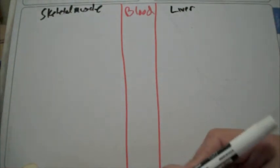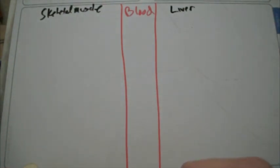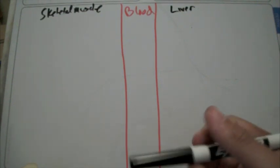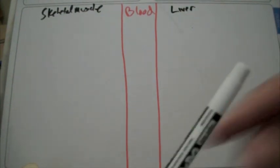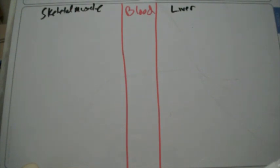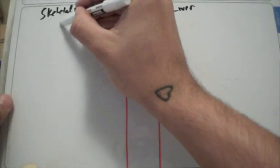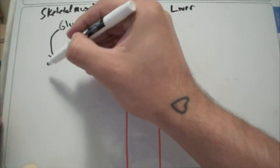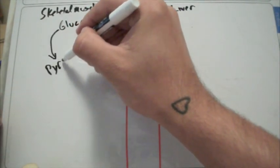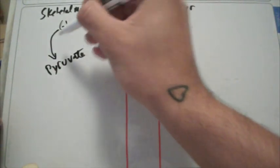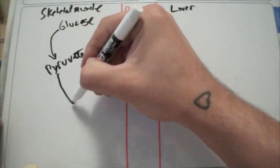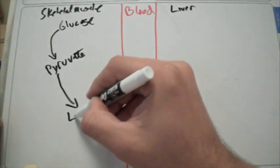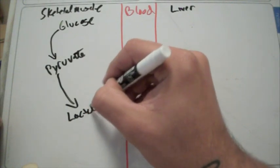Welcome back. Today we're going to learn about the Cori cycle and another similar cycle that follows glucose metabolism and transport throughout your body. I'm going to start off with our glucose, which gets turned into pyruvate through glycolysis, which then gets made into lactate when it's used.